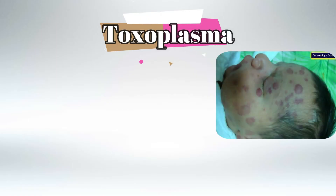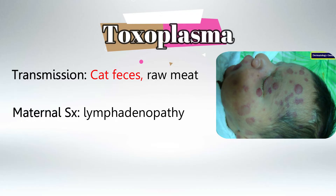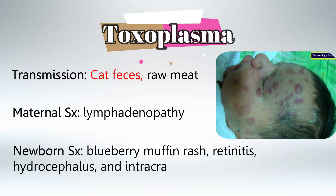T in TORCH stands for toxoplasma, which transmits via cat feces and raw meat. The mother would usually be asymptomatic, but if she would have any symptoms it would be lymphadenopathy. The newborn would have the classic blueberry muffin rash for TORCH infections, and also retinitis, hydrocephalus, and intracranial calcifications.